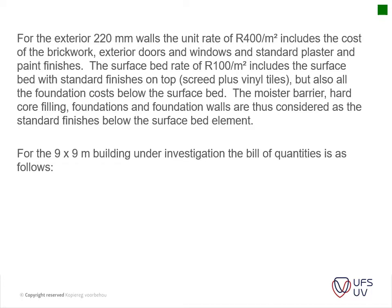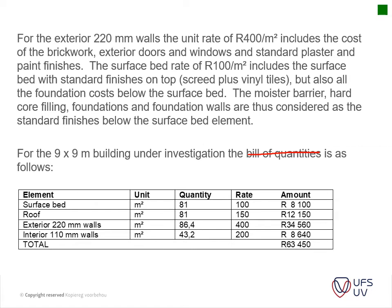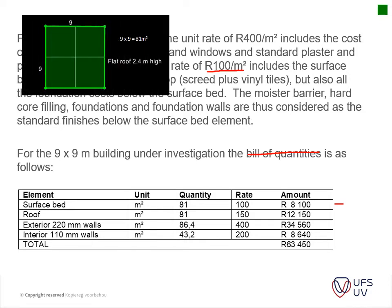For the 9x9 meter building under investigation, the schedule of quantities is as follows. The surface bed is 9x9, amounting to 81 square meters at a rate of 100 rand per square meter, giving an amount of R8,100. The roof is also 9x9, giving 81 square meters at a rate of 150 rand per square meter.